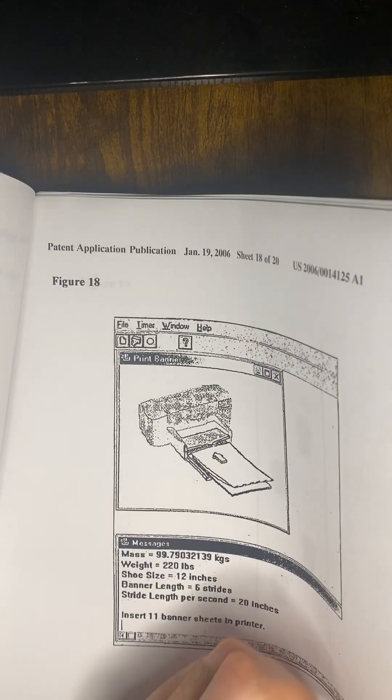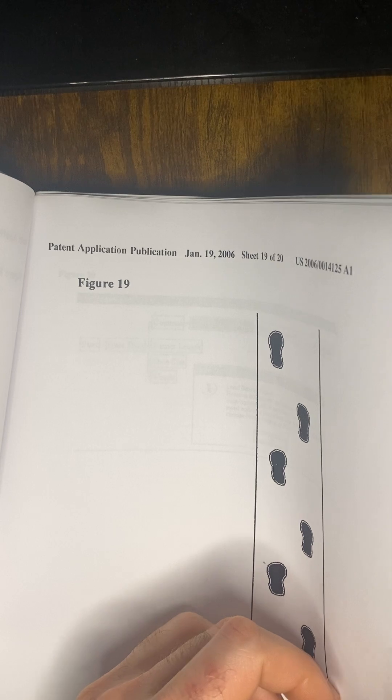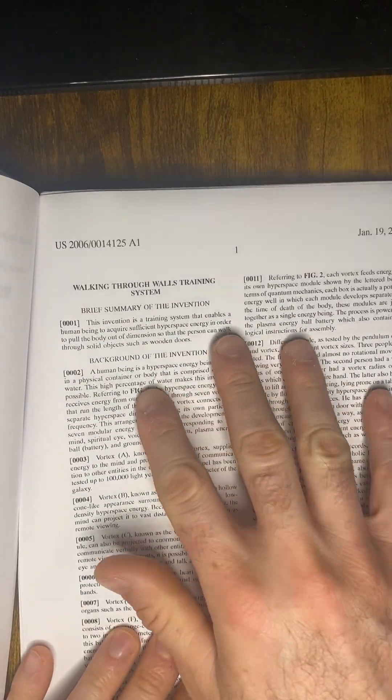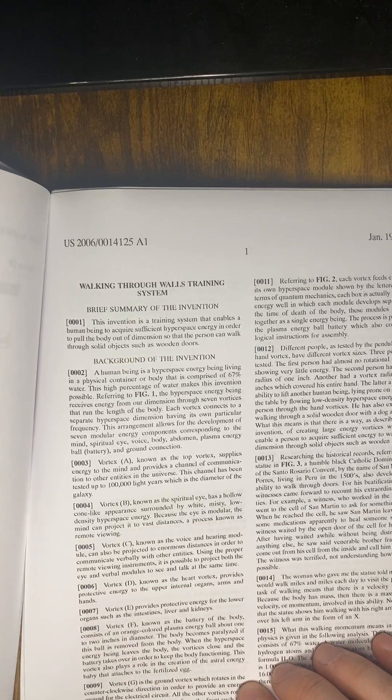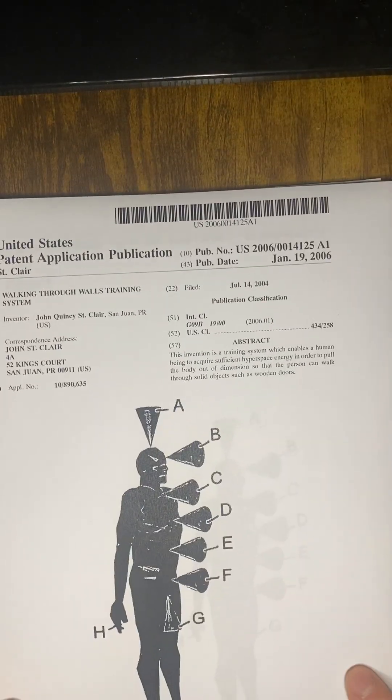And then once you get to the end, you've got your little banner here. Once you get to the end, then that's when you transition into your written description part. And here you're going to talk about each figure. And so that is the figures of a United States patent application publication.